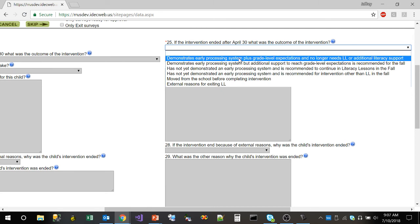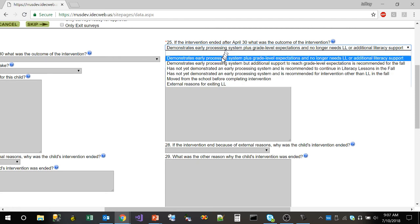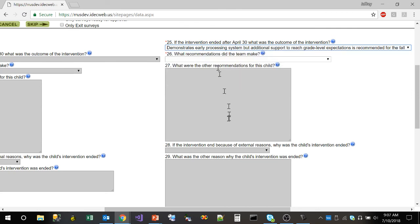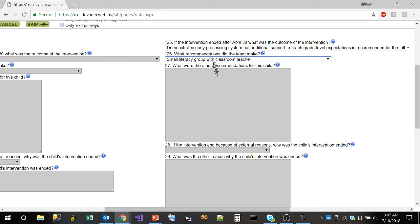But for example, if we select that they have an additional recommendation for the child, 26 becomes enabled, they indicate what that extra recommendation is. If they select other, they type in what the other recommendation is.